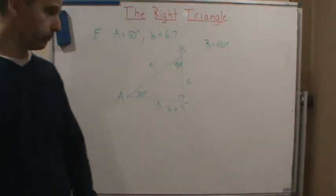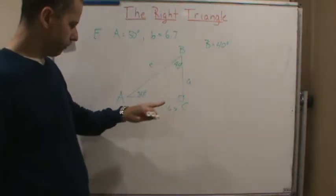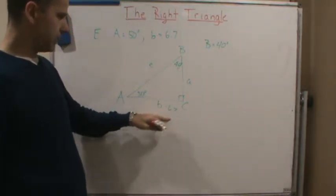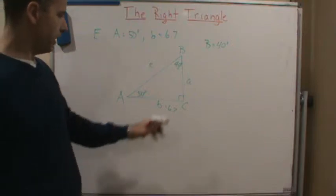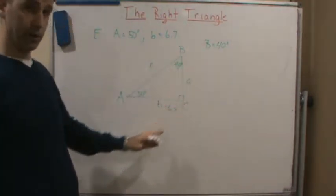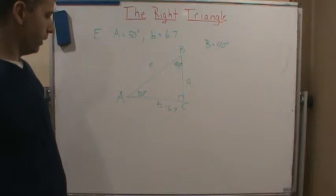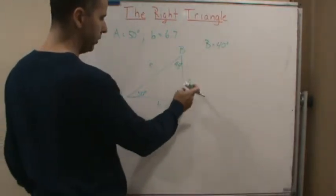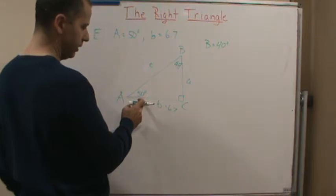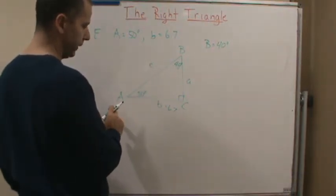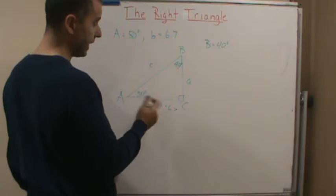Okay, now, we know one of the sides. Well, we can get the other side by using trig functions, right? So we can use, to get this one, we could use the sine, well, we've got the hypotenuse here, so we can't use sine, so we could use tangent.